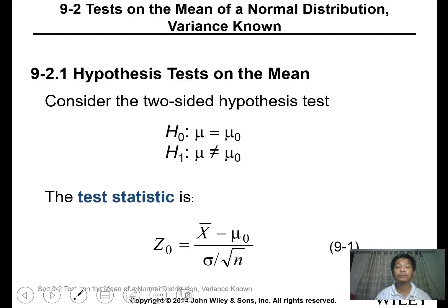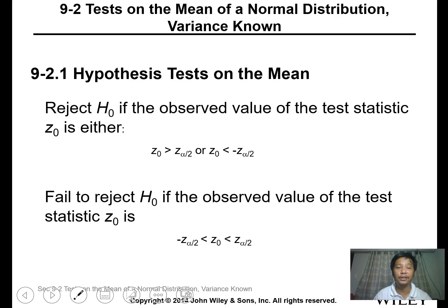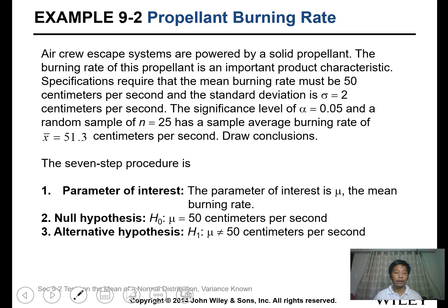The first test is for the mean of a normal distribution with known variance. Consider the two-sided hypothesis test: H0 is mu equals mu-not and H1 is mu not equal to mu-not. The test statistic is the Z-test. The rejection criteria: reject if the calculated Z is greater than Z-alpha/2 or less than negative Z-alpha/2; fail to reject if between those values.